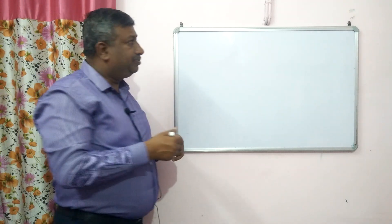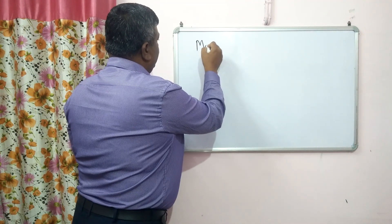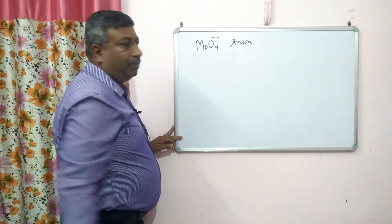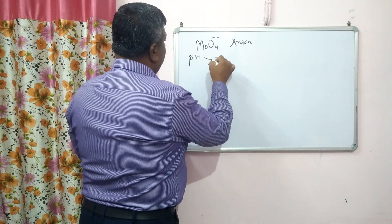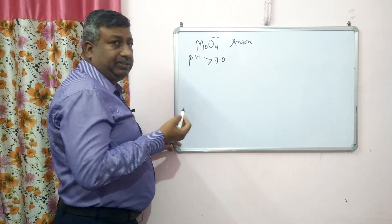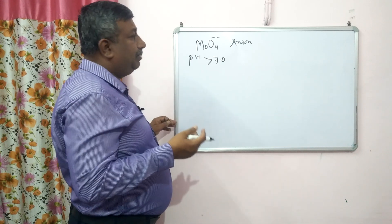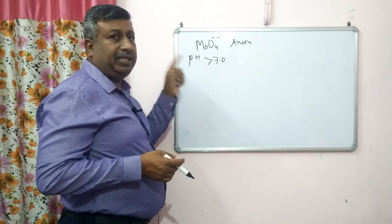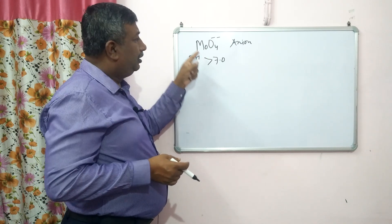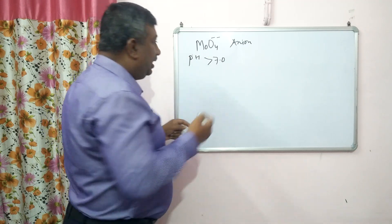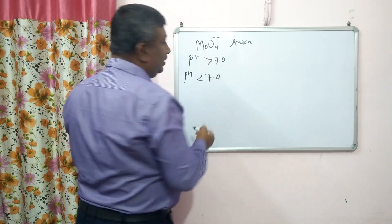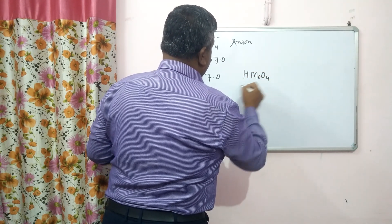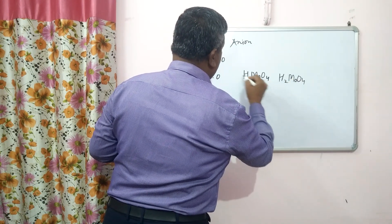Molybdenum is absorbed in the oxidized form as MoO₄²⁻, the divalent anion, which is the plant-available form. When pH is higher than 7, this form exists. At pH less than 7, hydrogen ions dominate, leading to formation of HMoO₄⁻ and then H₂MoO₄, and the solubility of these forms is less.